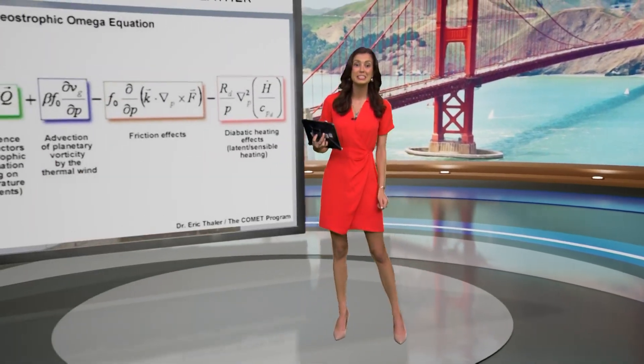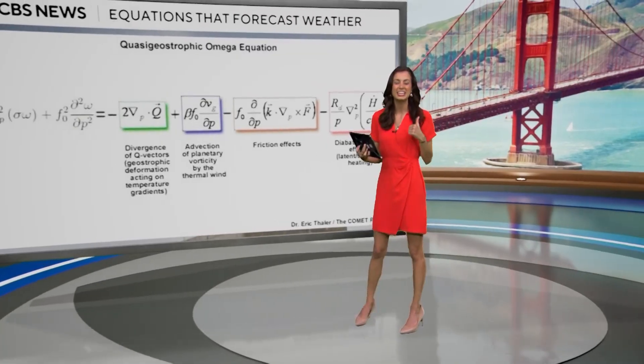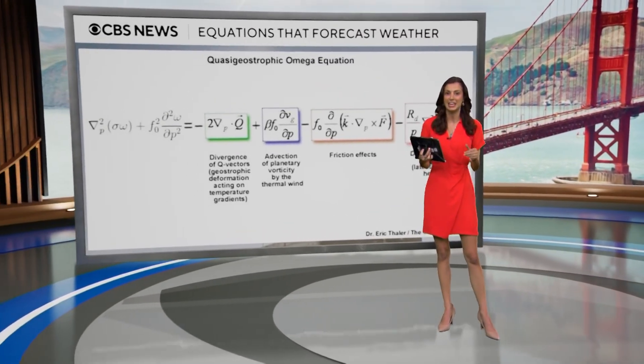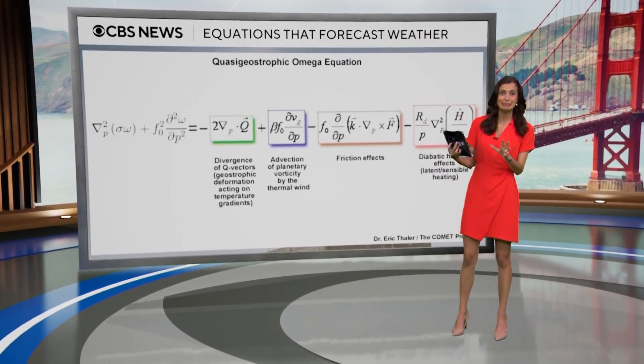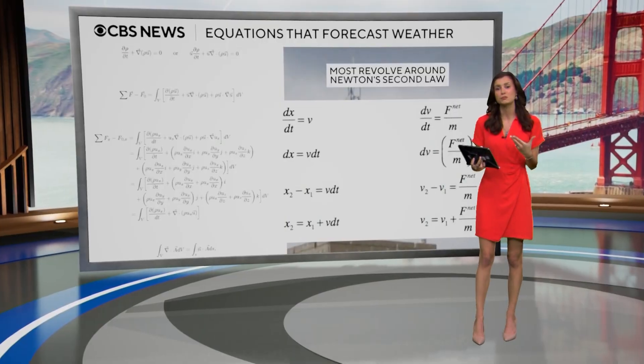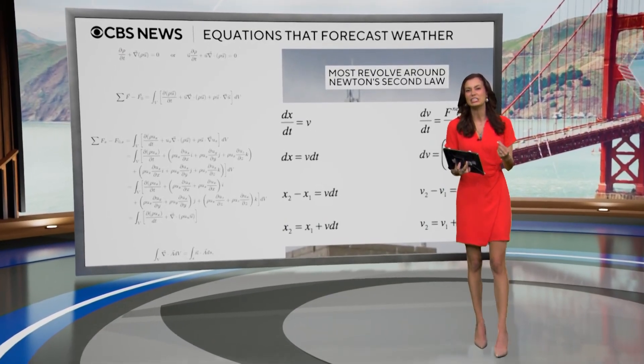I'm meteorologist Zoe Mintz, and did you know that meteorologists forecast the weather using a bunch of different physics and math equations? The one I'm pulling up next to me is one of the big ones, known as the quasi-geostrophic omega equation, and it looks really scary — it looks like a lot — but it all really just boils down to Newton's second law of motion.